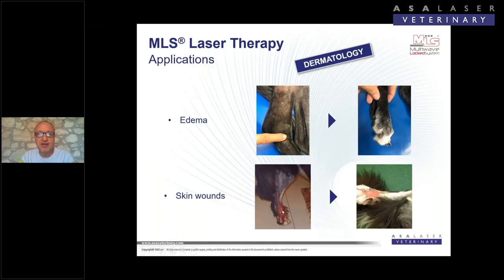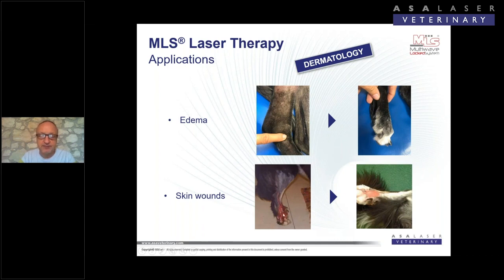A very special situation is the healing of skin wounds — wounds with loss of tissue where I have no more skin and I'm not able to perform surgery to close it, requiring second-intention closure. This is a case called a gloving injury — it was a car accident. The owner of this dog was proposed amputation of the leg, and this was the result after the use of laser.